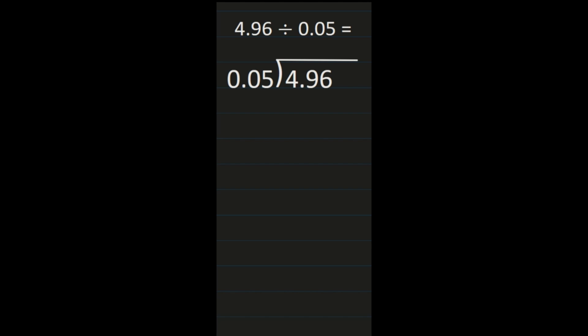Our next example: we have 4 and 96 hundredths divided by 5 hundredths. So 4 and 96 hundredths goes on the inside; 5 hundredths goes on the outside. The first thing I need to do is move the decimal in my divisor two places to the right to get a whole number. If I move it two places to the right in the divisor, the decimal in my dividend also needs to move two places to the right. Once I've moved those decimals, I have 496 divided by 5.